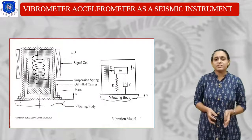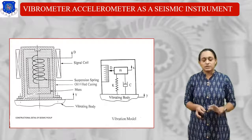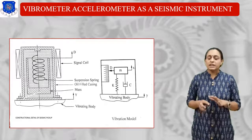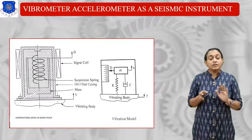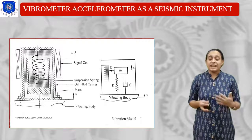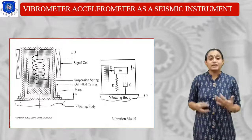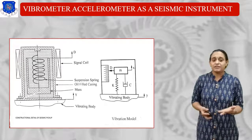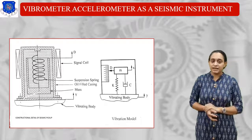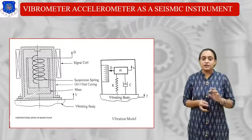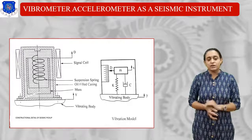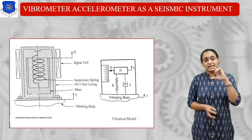Next, vibrometer and accelerometer as a seismic instrument. The vibrometer can measure vibrations; the accelerometer can measure acceleration. In any system, if you are choosing one, we have to use a combination of vibrometer as well as accelerometer. Now, as the seismic pickup: there is a drum containing oil, and inside is a mass and spring attached at the center.